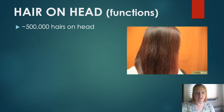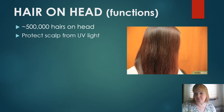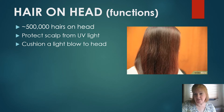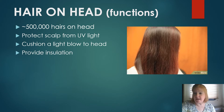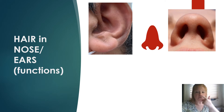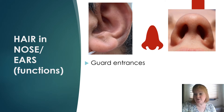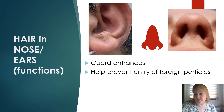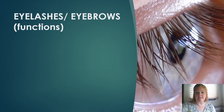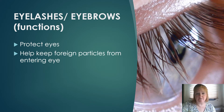Hair on your head — we have about 500,000 hairs. It protects the scalp from UV light, cushions a light blow to the head, and provides some insulation. Hair in our nose and ears guards the entrances and helps prevent the entry of foreign particles. Our eyelashes and eyebrows protect our eyes and help keep foreign particles from entering them.